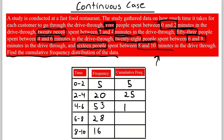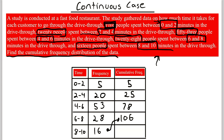For the number who took 6 minutes or less: 53 plus 20 plus 5 is 78 — the same as adding 53 to 25. Then for 8 minutes or less: adding 28 to 78 gives us 106. Finally, adding 16 to 106 gives us 122 — the number of people who took 10 minutes or less, which is everyone in the data set. This number equals the sample size of the study: 122 people.